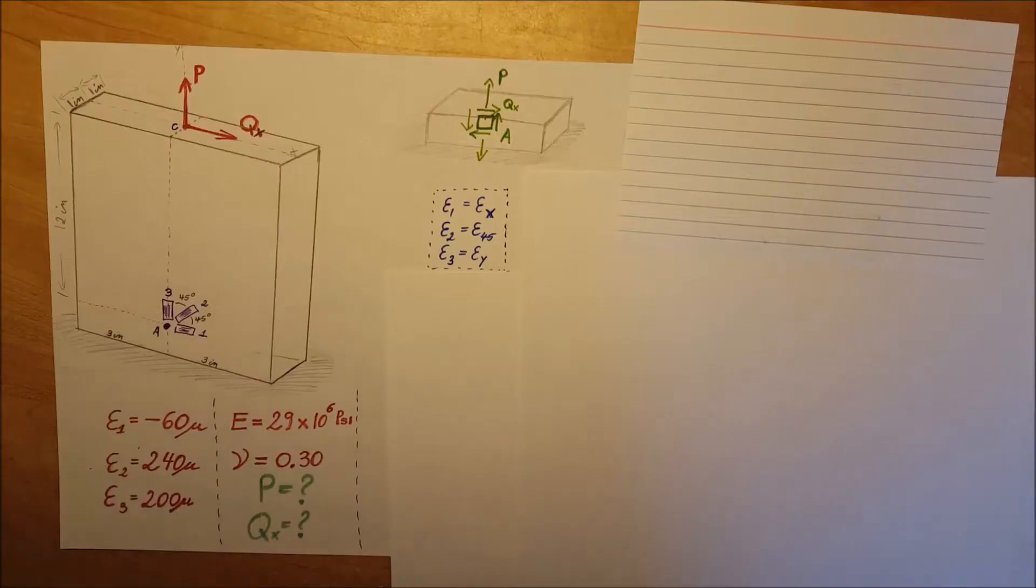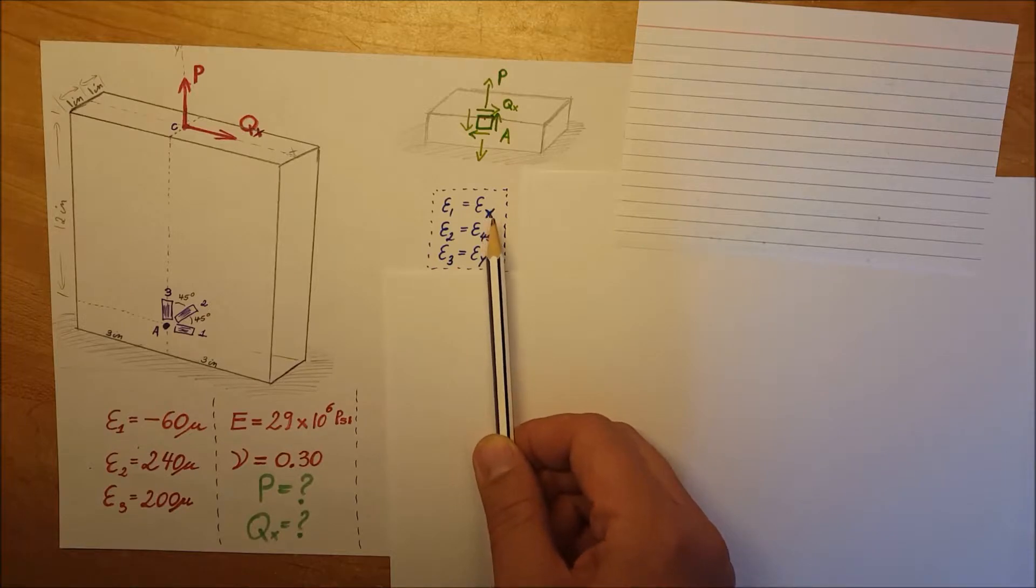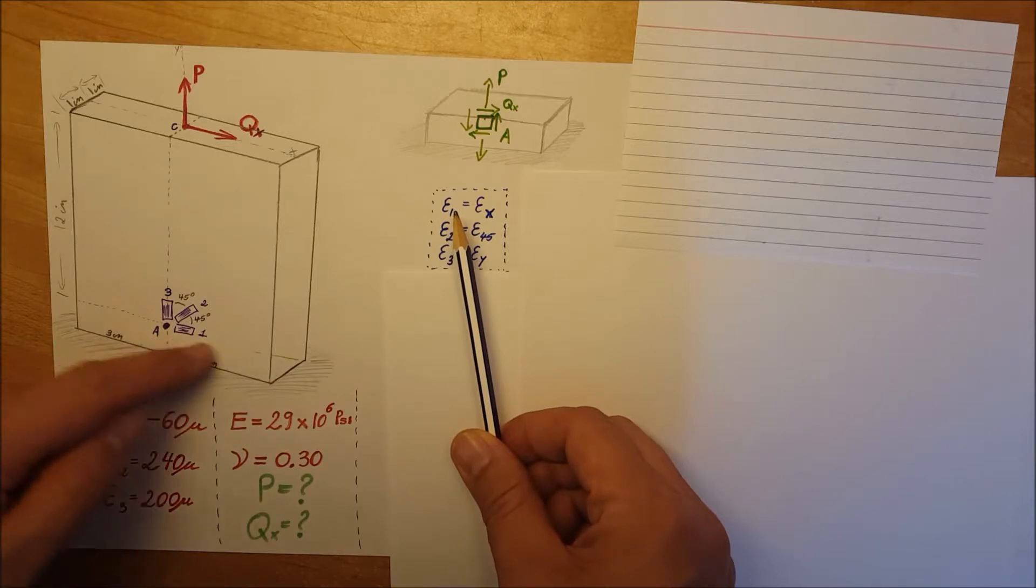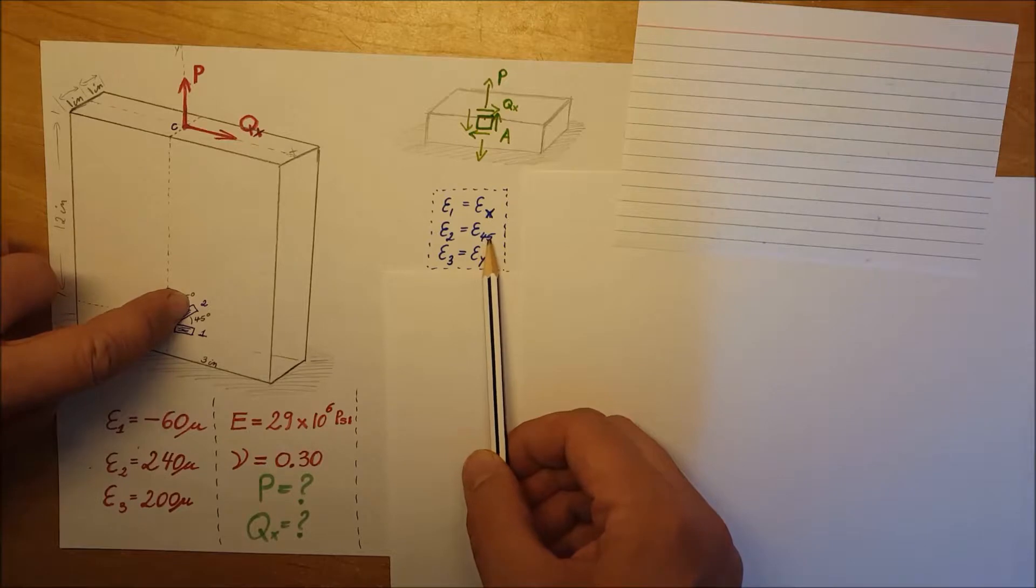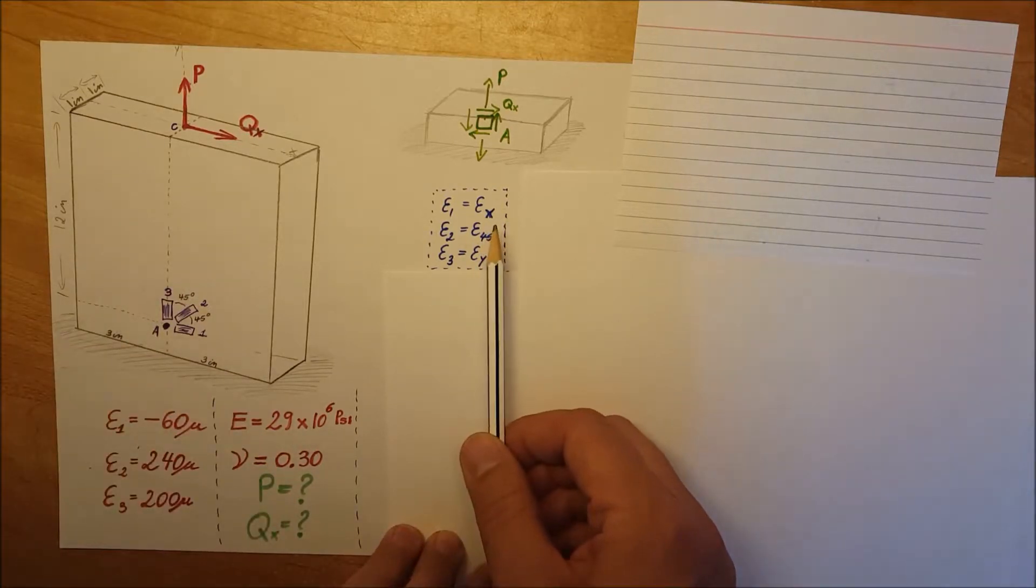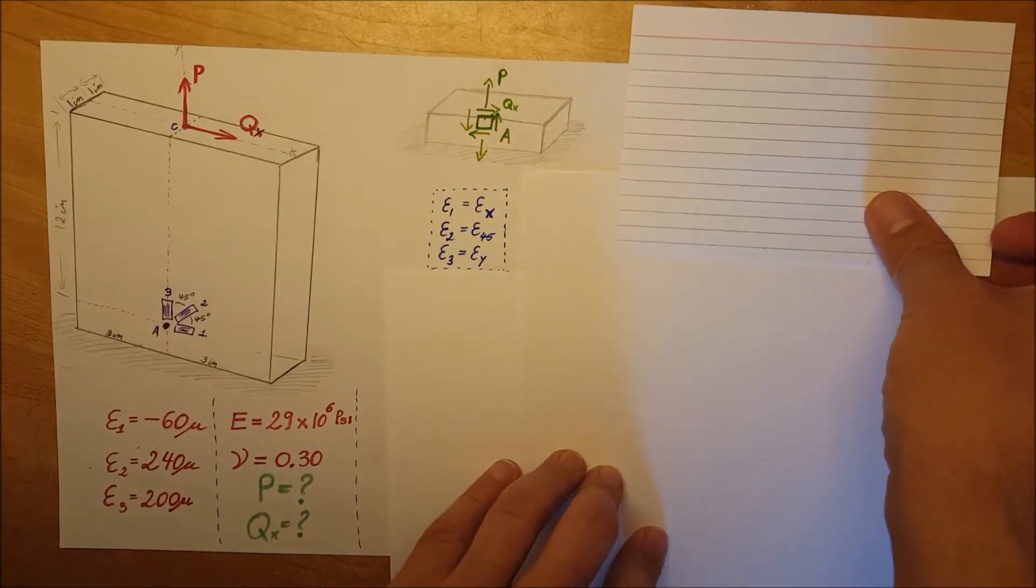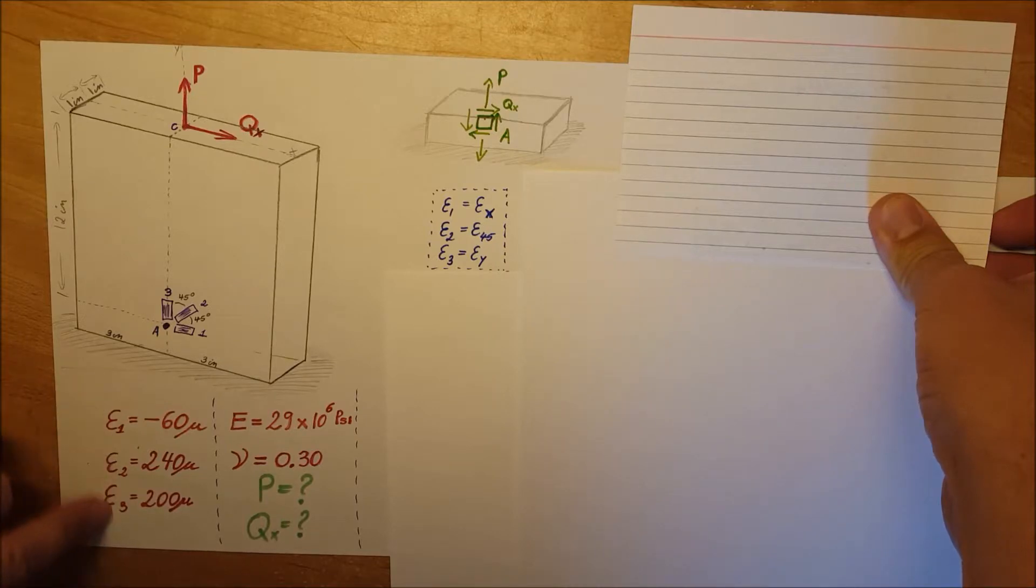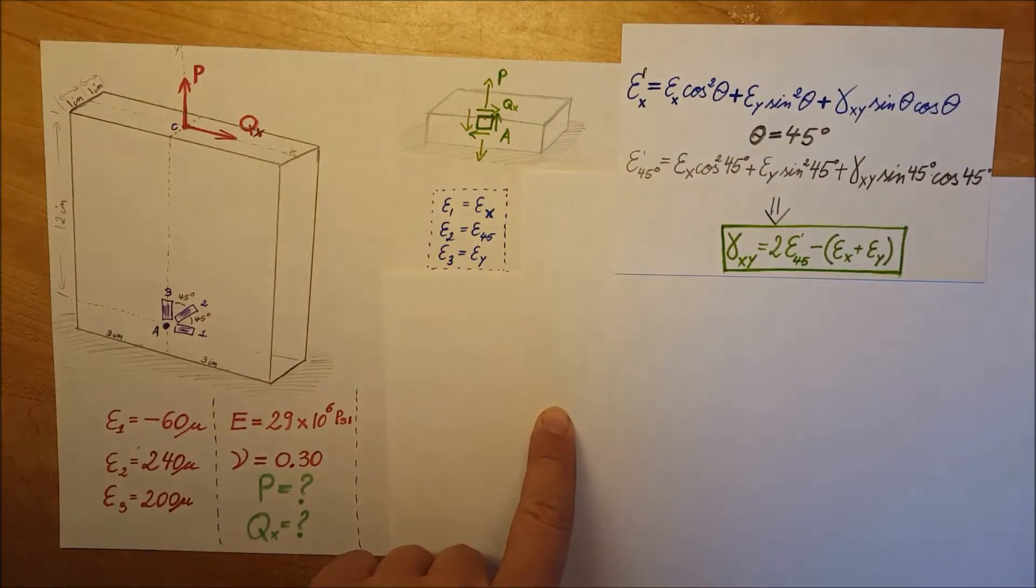I wrote down here my strain 1, strain 2, and 3 in a way that I can recognize and use in my formulas easier. My 1 will be my x, my 3 will be my y, and the 2 will be ε₄₅. This way when I use my formulas it's going to be easier. We have our axial or normal strains given, so now let's calculate our shear strain.